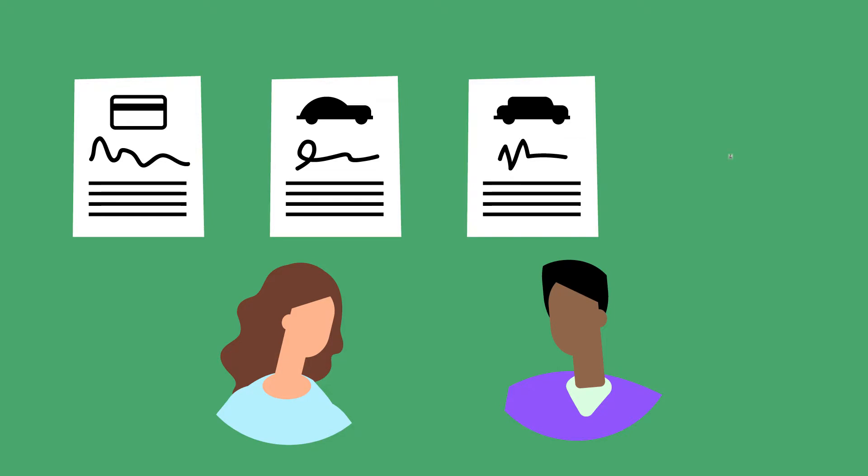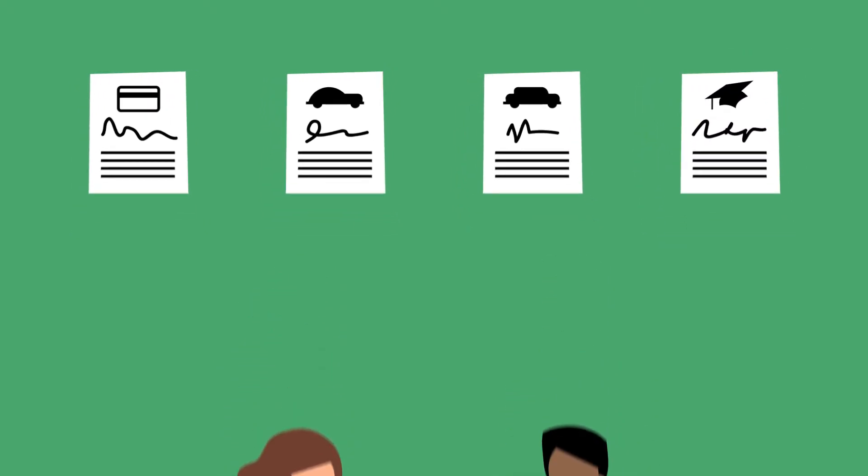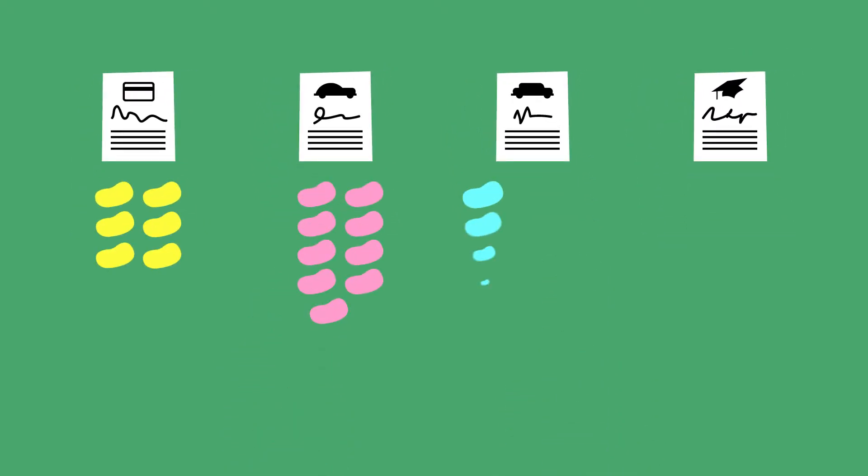They've been paying the minimums on a credit card, two car loans, and a student loan for years. Here are each of their debts shown as jelly beans they have to eat up.